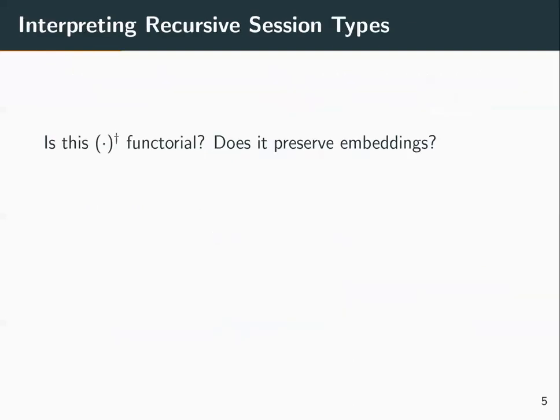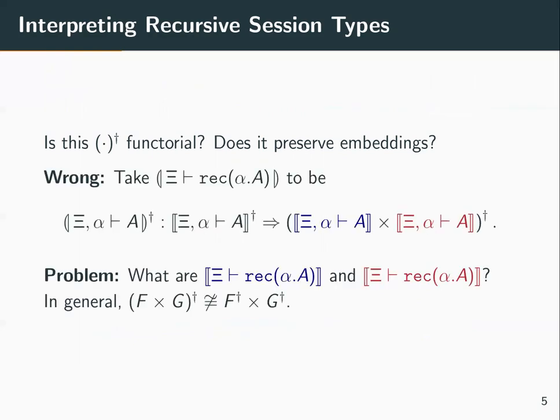So the question is: is this dagger operation functorial and does it preserve embeddings? And even if the answer is yes, we can't simply naively apply the dagger operation to the interpretation of the premise of the rule for the recursive type, because we end up with the wrong codomain.